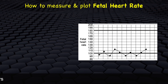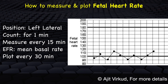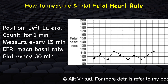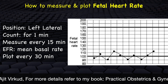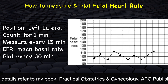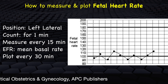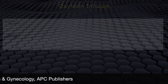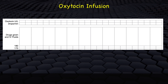To measure and plot fetal heart rate: with the patient in the left lateral position, count the fetal heart sounds for a full 1 minute just after a contraction has passed. Take fetal heart sounds every 15 minutes. If abnormal over 3 observations, appropriate action must be taken. If electronic fetal heart rate monitoring is done, the mean basal rate is recorded. Fetal heart sounds are recorded on the top part of the partograph every 30 minutes, although they are actually checked every 15 minutes. If oxytocin augmentation is done, record the amount and drip rate every 30 minutes, and record any additional drugs such as antibiotics if given.